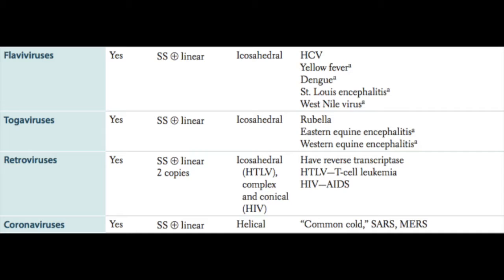Flaviviruses have icosahedral capsid symmetry and include HCV or hepatitis C, yellow fever, dengue virus, and the encephalitis viruses — St. Louis encephalitis and West Nile encephalitis virus. The togaviruses also have icosahedral capsid symmetry and include the rubella virus, or the cause of German measles, and Eastern and Western equine encephalitis viruses.